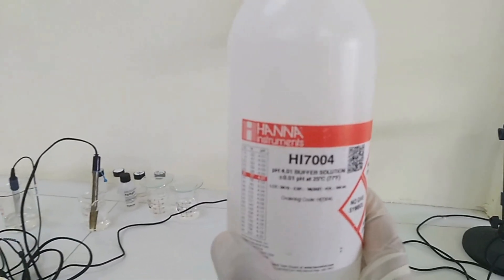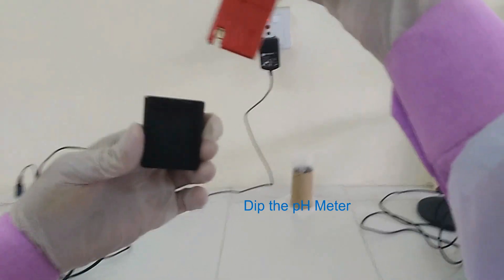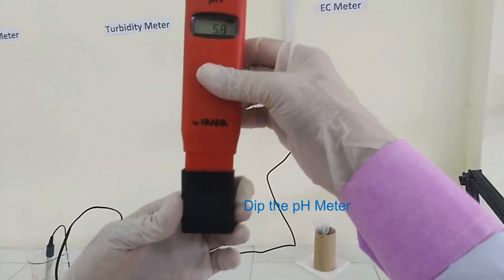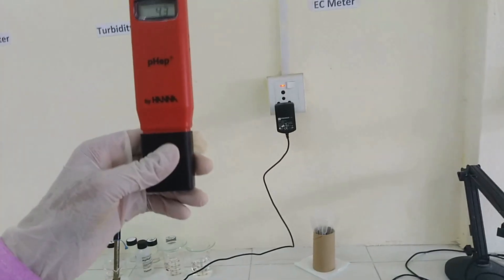Now take buffer solution of pH 4.01 in cap and dip the pH meter. Again wait for stable reading.